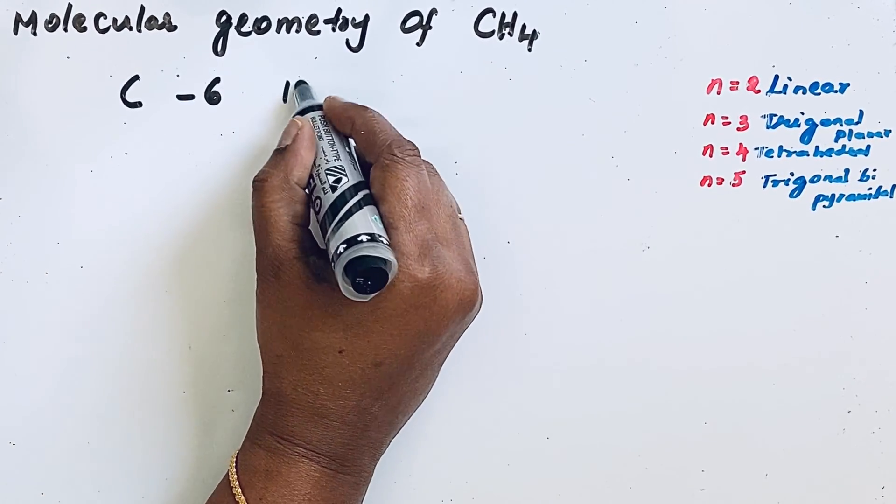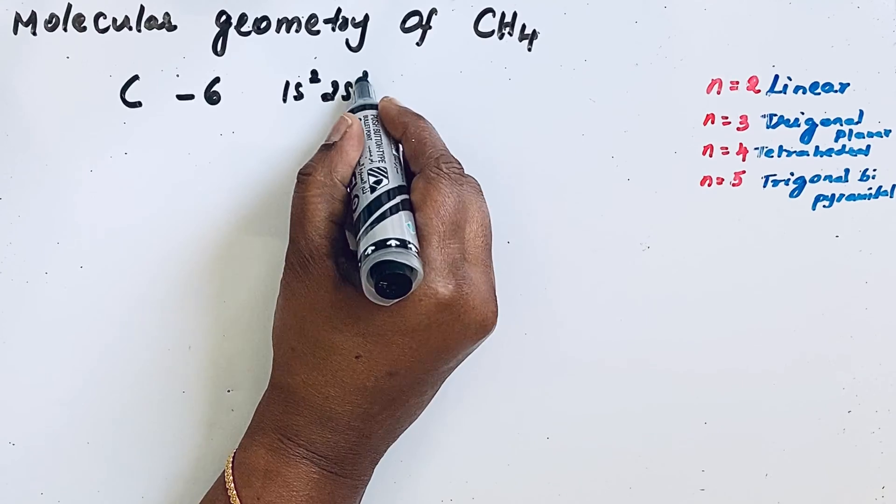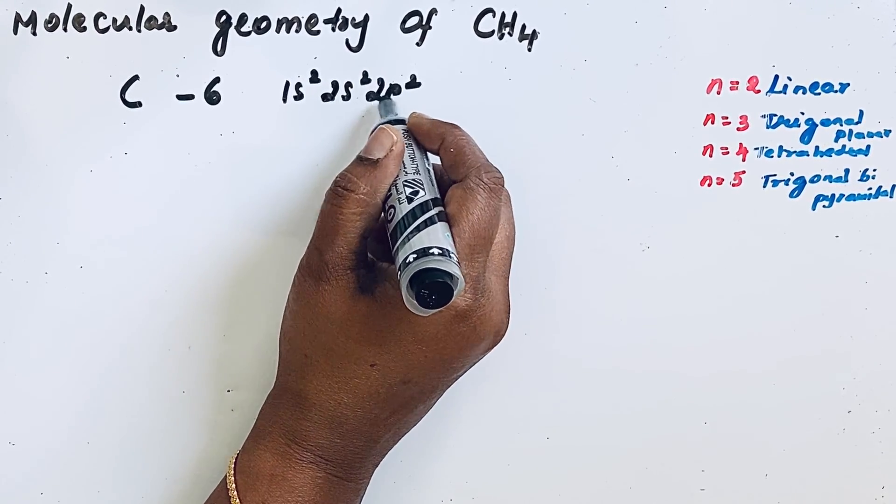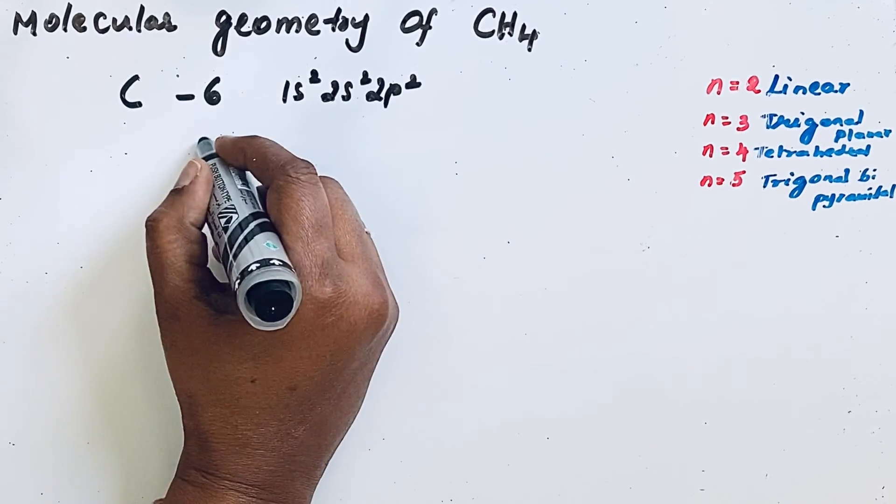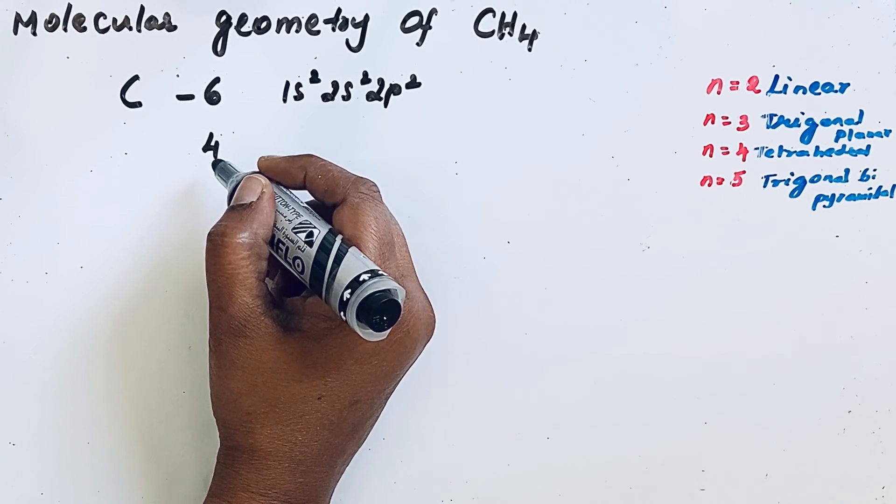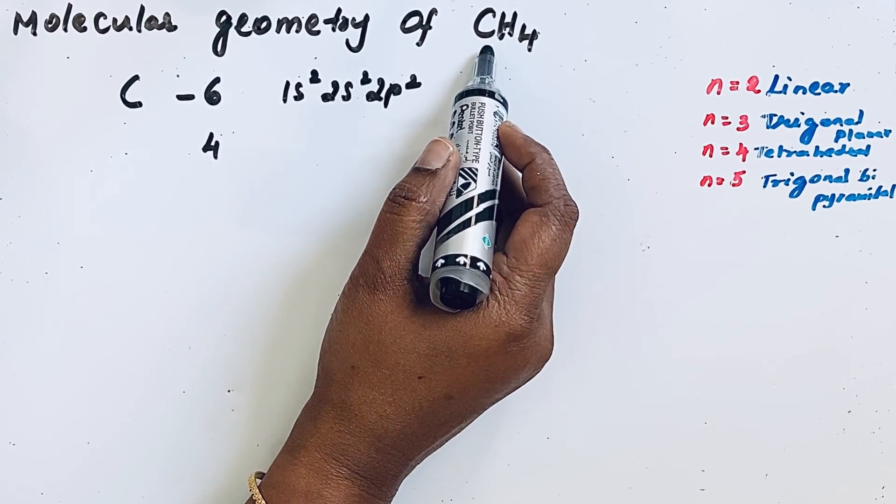Its electronic configuration is 1s2, 2s2, 2p2. How many valence electrons are there? Four valence electrons. These four electrons can form four bonds with four hydrogen atoms in methane molecule.